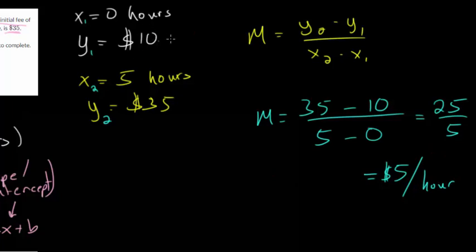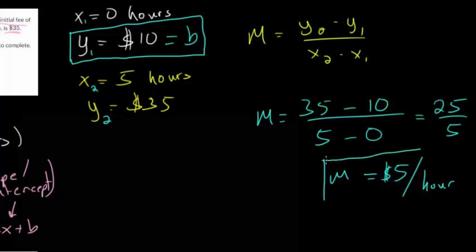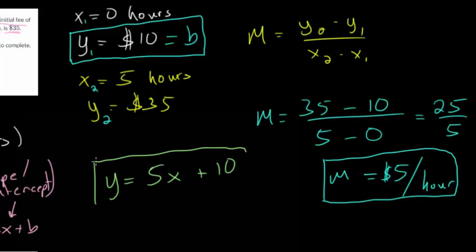We have our y-intercept. That's right here. B is just equal to 10. Since that's when x is 0, this is where it will cross that y-axis. And we know m is this $5 per hour. And your slope should be a rate. It should be some unit per some other unit. So we can now combine these. y equals m, which is 5, times x, plus b, which is 10. So this is what we think is the equation.